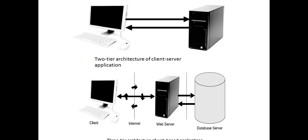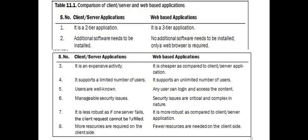In three-tier architecture, the internet handles data processing. The applications are partitioned into three sub-tiers. Three-tier architecture requires less on the client system. Now let us see the difference between the two architectures. The client-server application is called a two-tier application, but a web-based application is called a three-tier application.